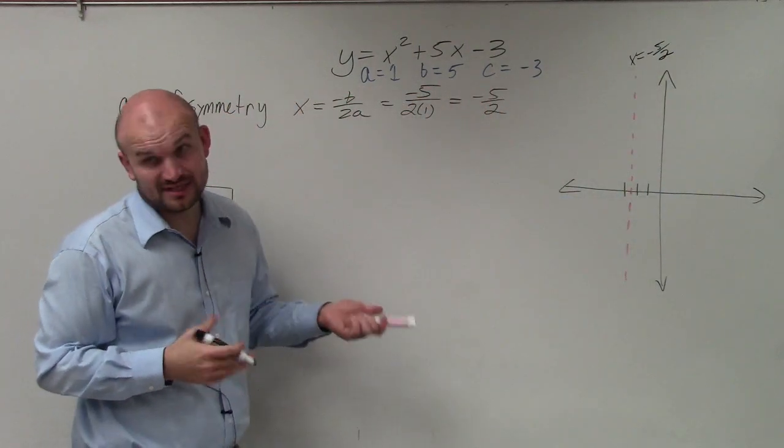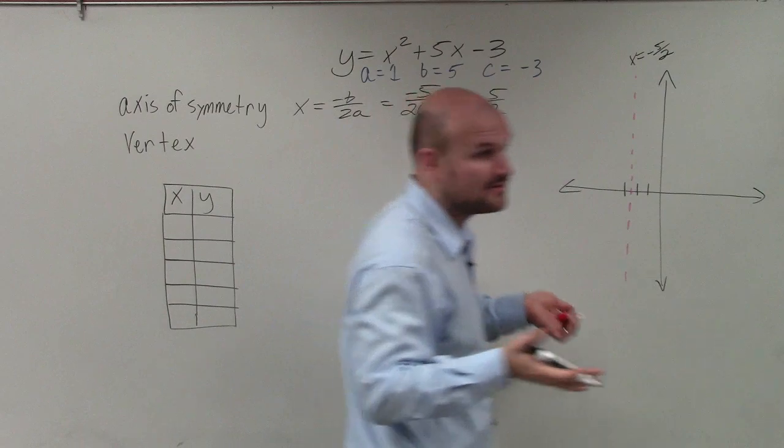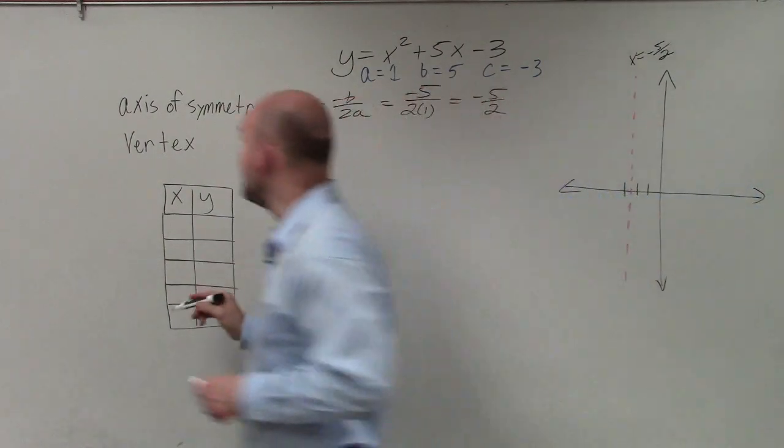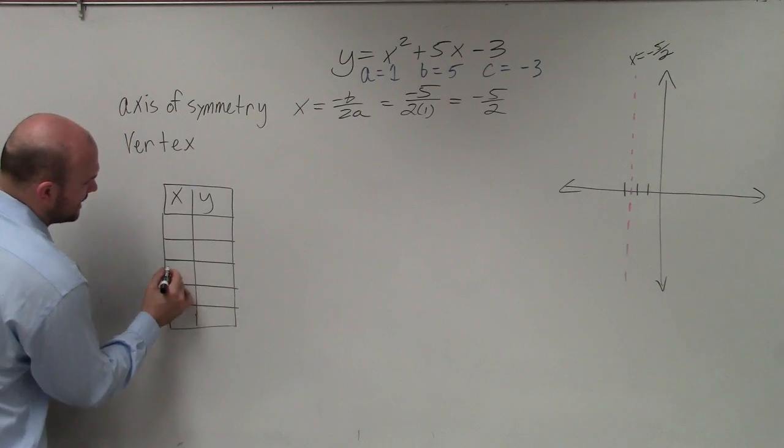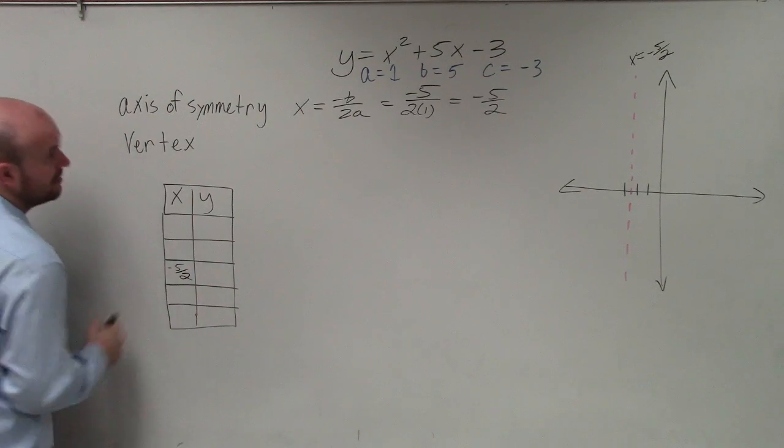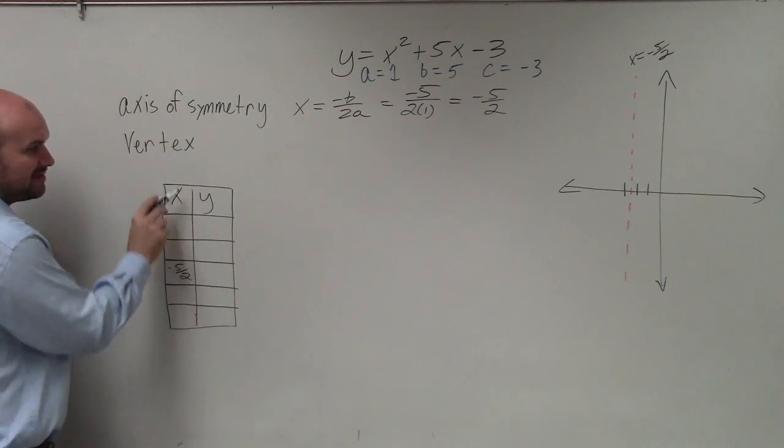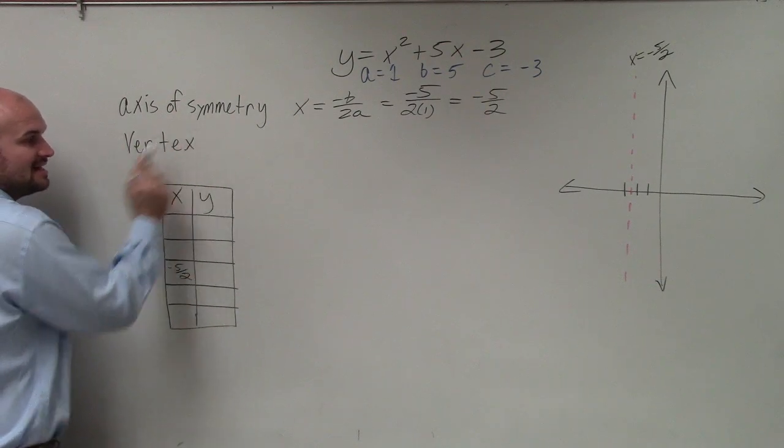Now, to find the vertex, this is the difficult part of the problem, I assume. But we're not always going to have whole numbers for our axis of symmetry. So to find the vertex, remember, we're going to plug in our x value. And then we're going to plug that into our equation to find the vertex. Because remember, the vertex is a coordinate point. It has an x and a y coordinate.